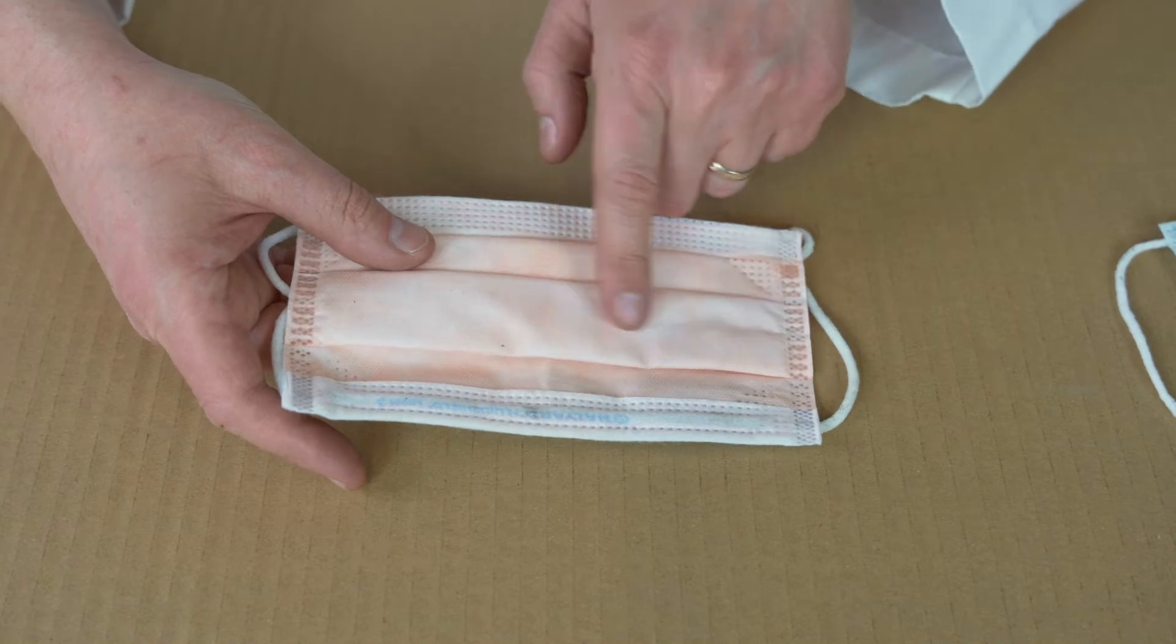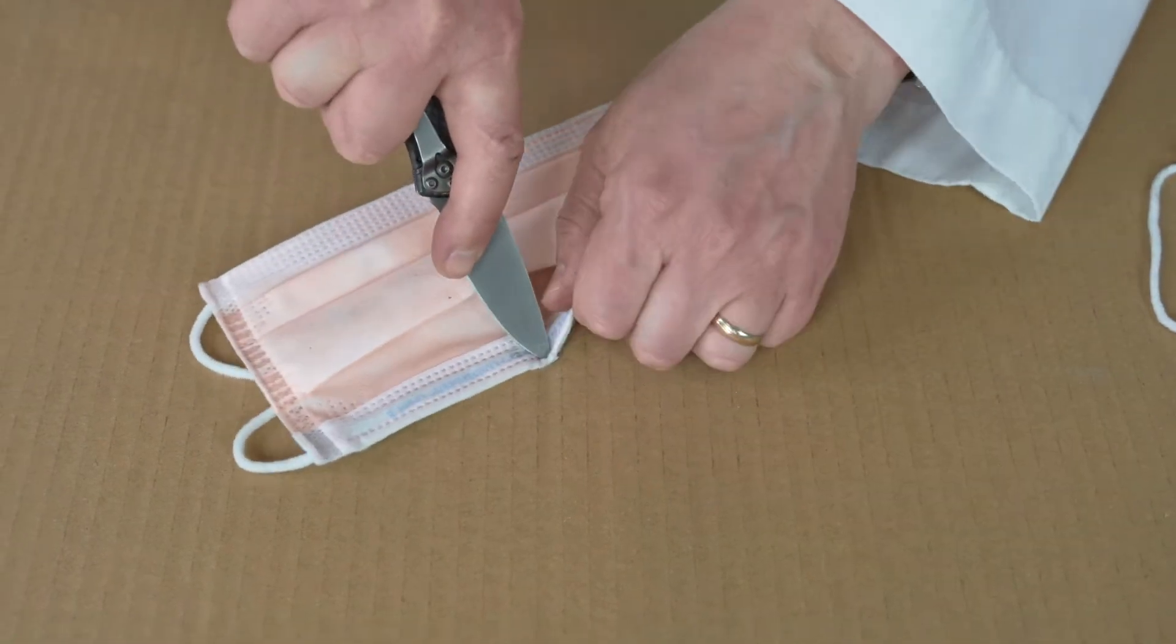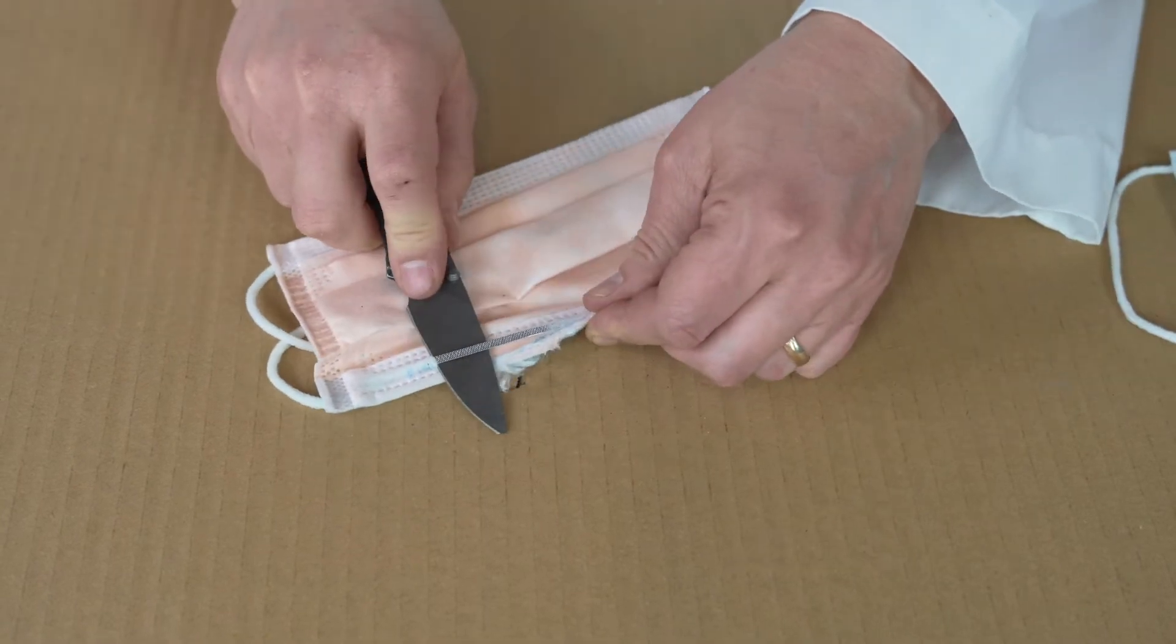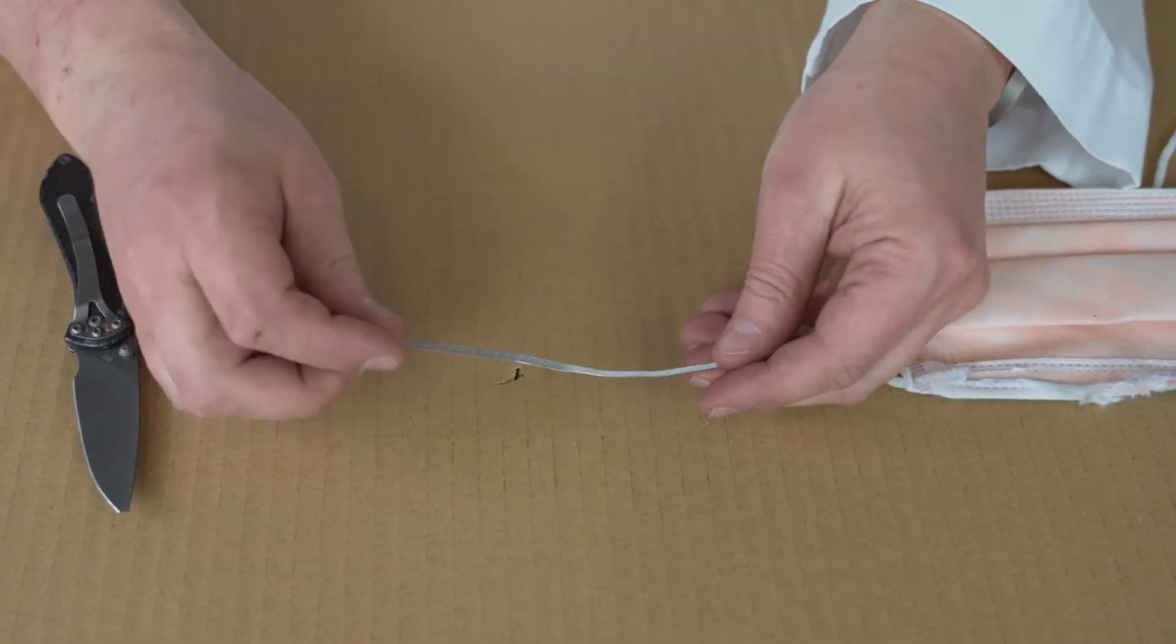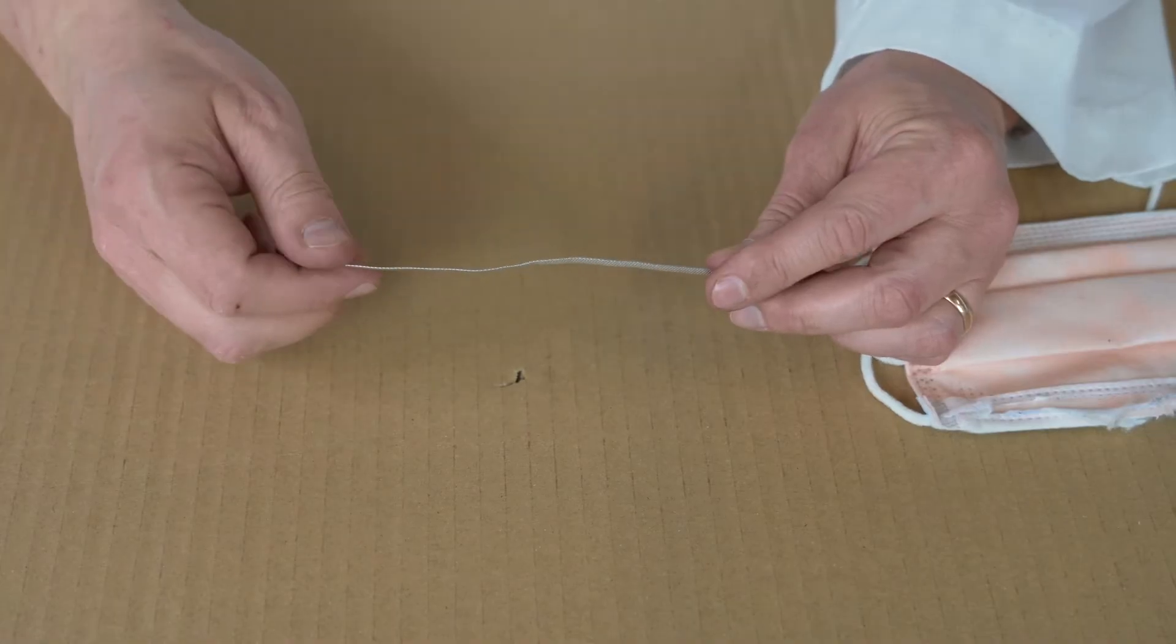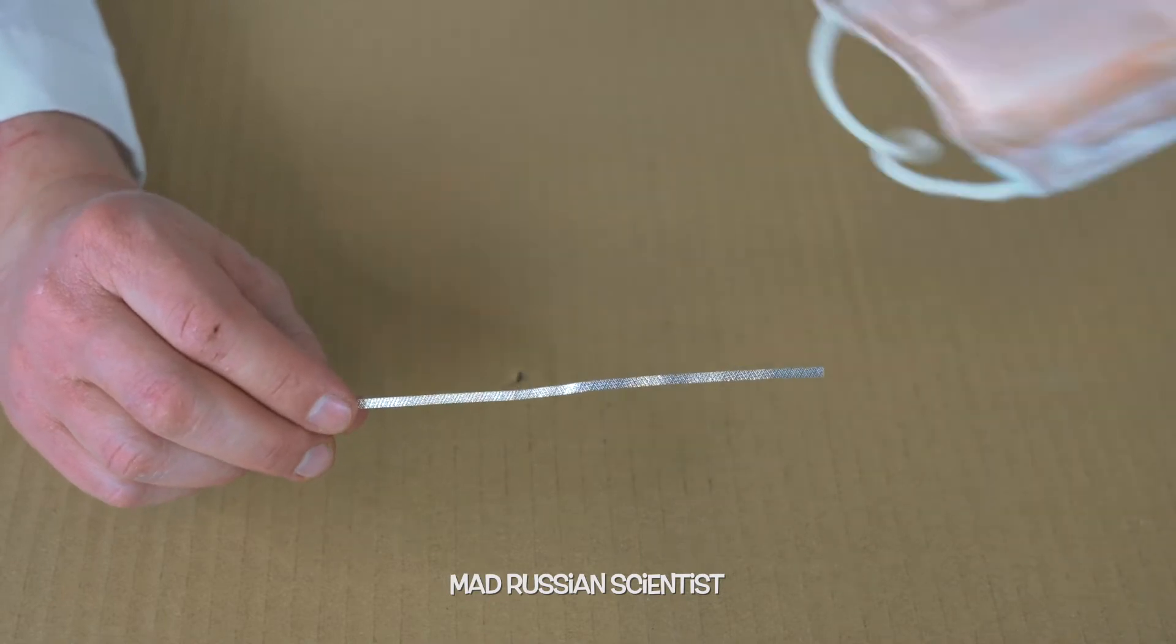The reason this is actually happening is because one part of the mask has a metal wire, which is right here. Check this out - metal wire. And that's actually why the face mask catches on fire, because this piece of metal sparks and ignites the material.